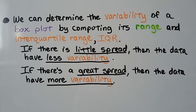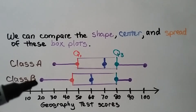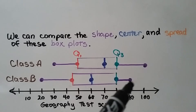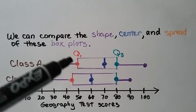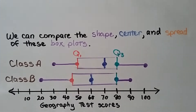We can determine the variability of a box plot by computing its range and interquartile range, its IQR. If there's little spread, then the data have less variability. If there's a great spread, then the data have more variability. These box plots show geography test scores for class A and class B. We can see their minimum values on the edge of the whiskers, their maximum values on the other edge, and the medians of the lower half, upper half, and all the data.